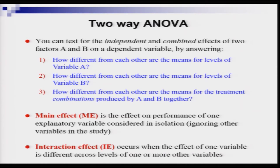We start the discussion on two-way ANOVA by asking three questions. When you have two qualitative variables or factors A and B affecting a continuous dependent variable Y, you can think about two different effects: the independent main effects and the combined interaction effect. If you can measure these, you can establish that factors A and B have a statistically significant impact on Y.